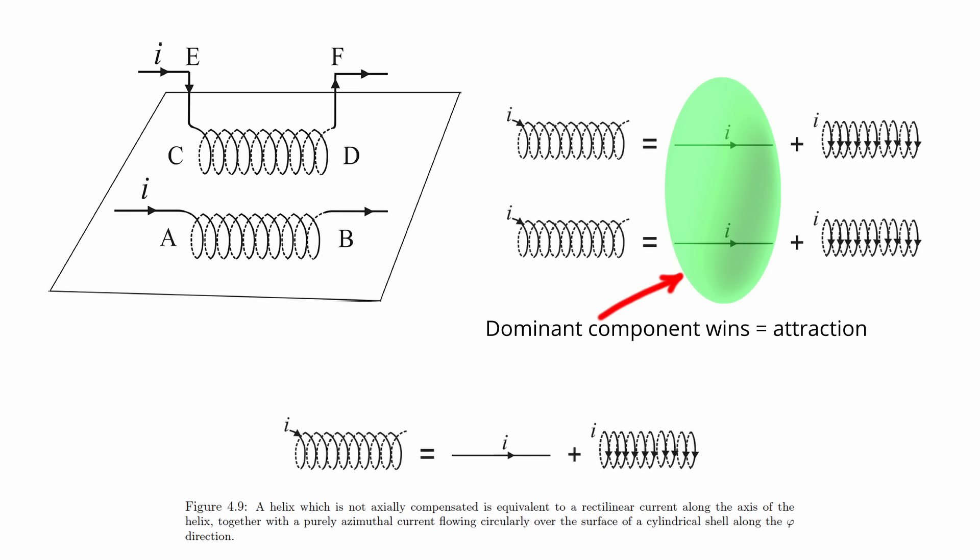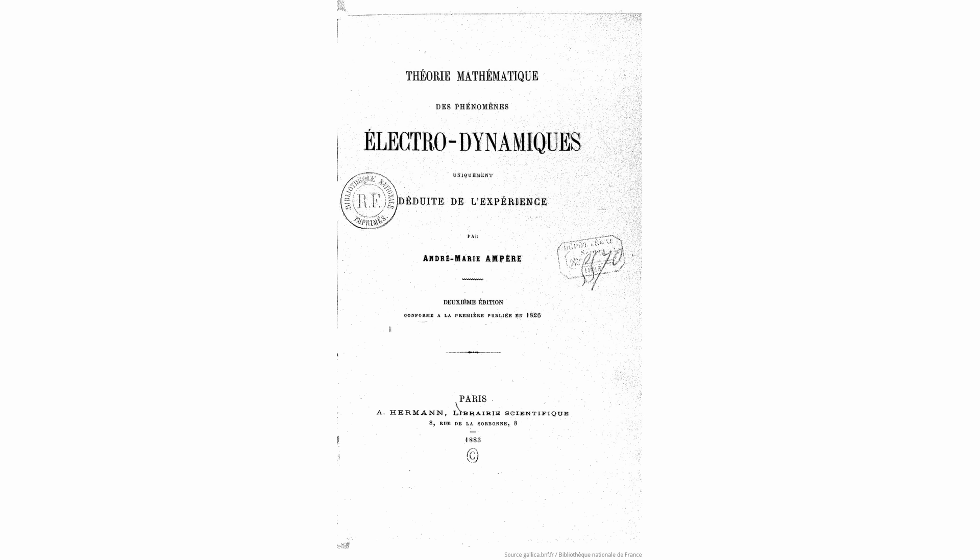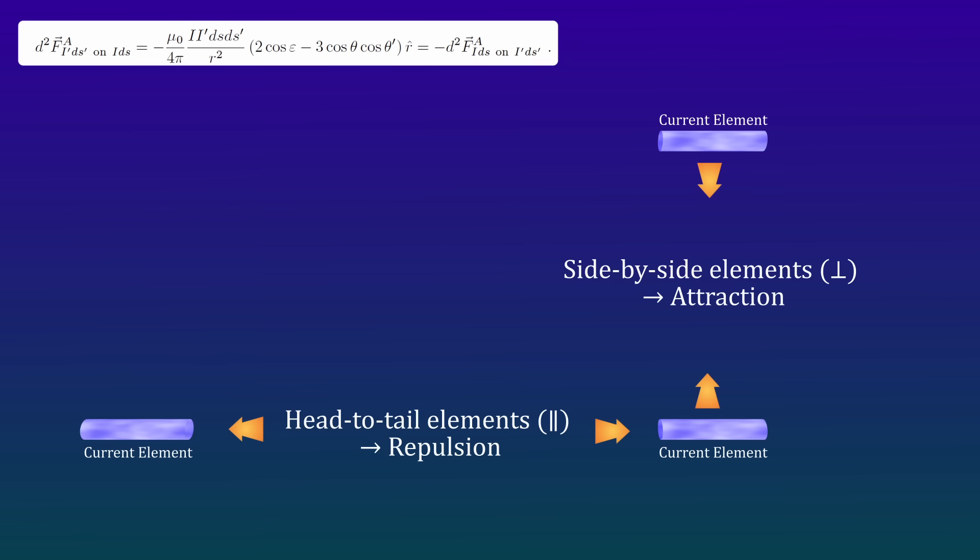Ampère realised that in the geometry of helices, some of these longitudinal repulsions didn't cancel, they shifted the balance. The sideways attraction and head to tail repulsion combined in a way that reversed the expected outcome. It was a powerful demonstration, not of magnetism, but of direct forces between moving charges, acting in ways the magnetic field alone couldn't explain.